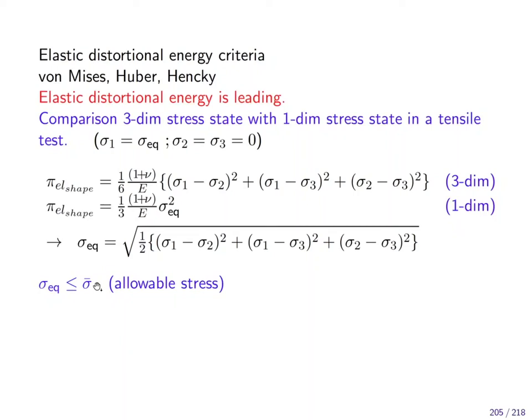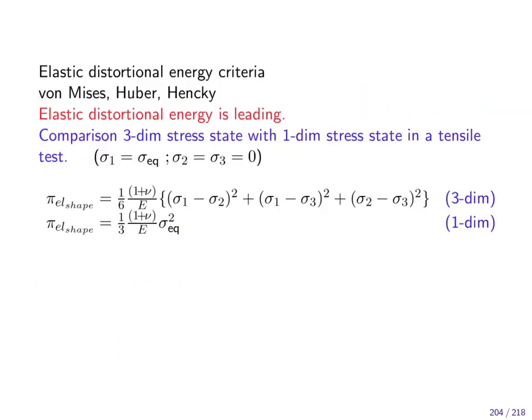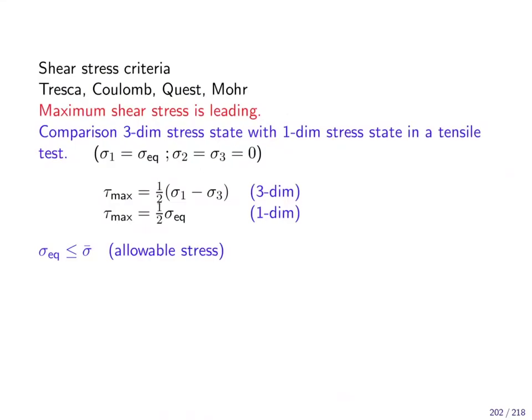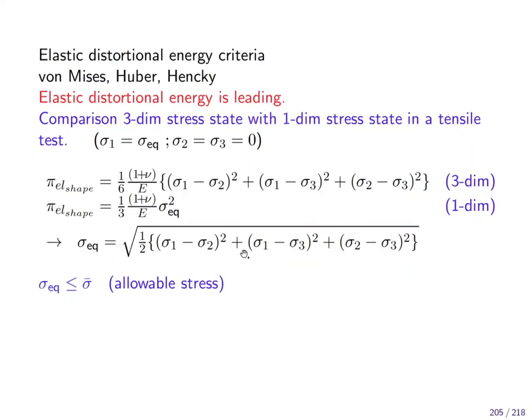Now the question is, what is bigger? Which one of the two criterion is bigger? Now, help me by answering this question. So, from von Mises, we get the one-half sigma equivalent. From Tresca, we get the one-half, and here we get the shape change energy with the one over three with this pre-factor here.